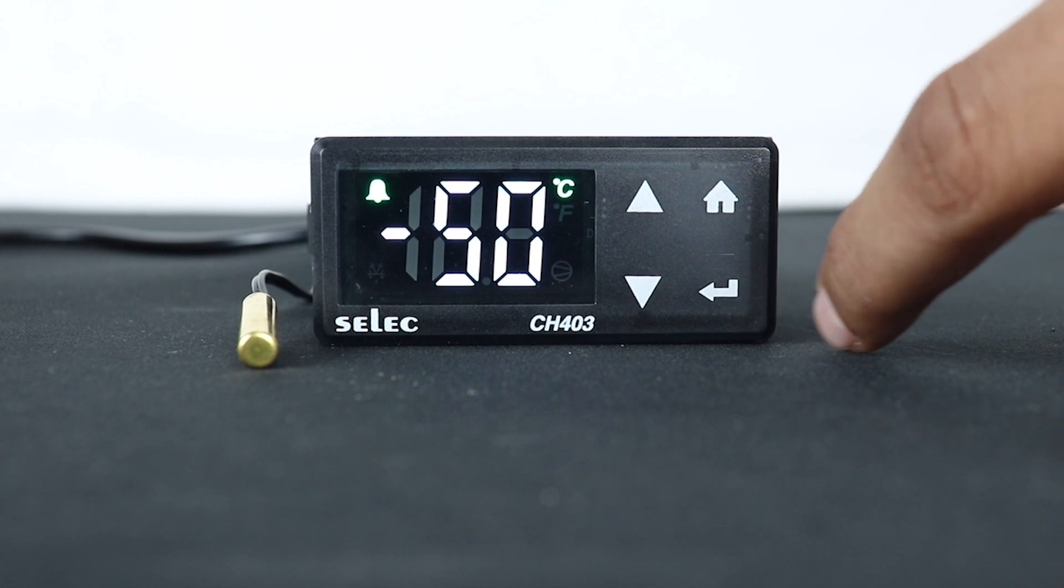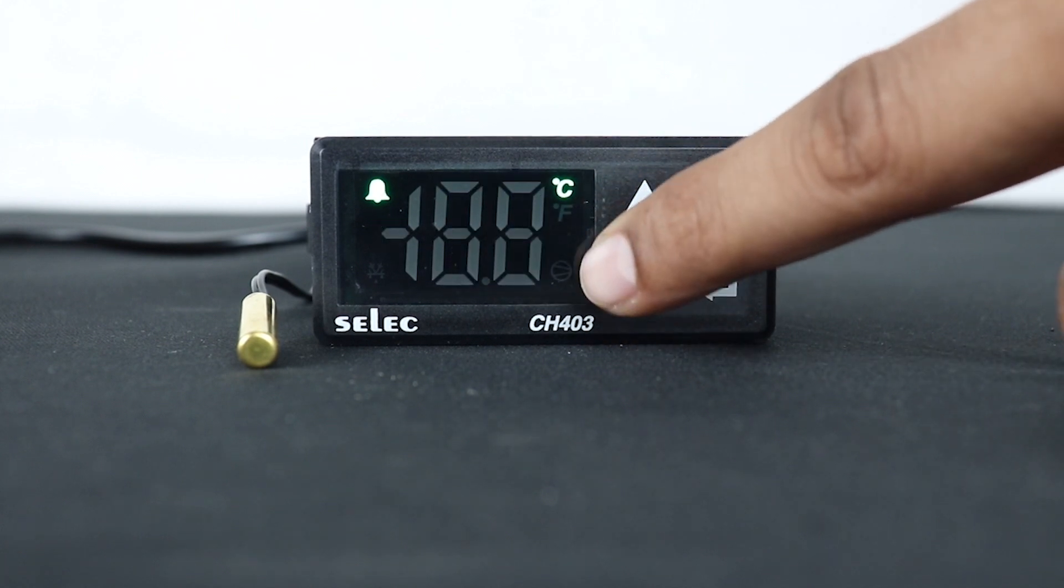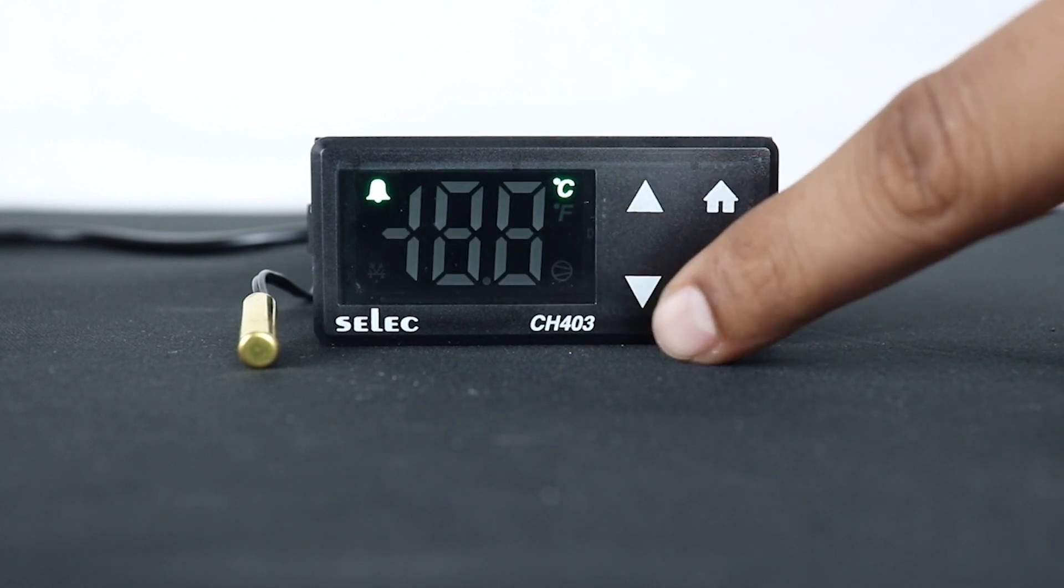Now, proceed to P3 to set the low alarm for the controller. The alarm bell symbol will glow when the present value reaches the high alarm or low alarm set values in predefined range.